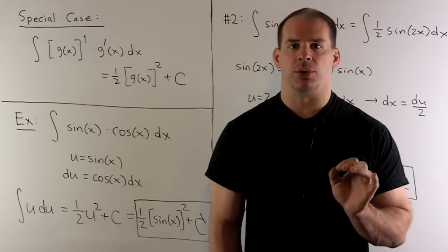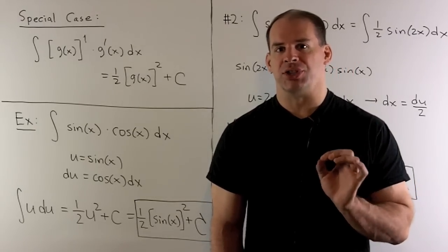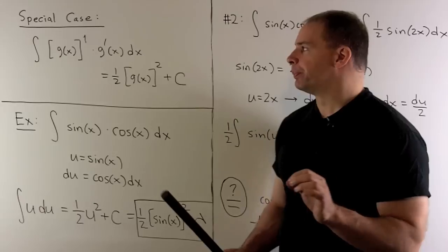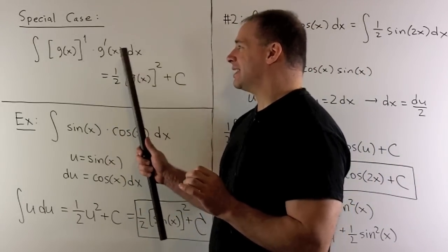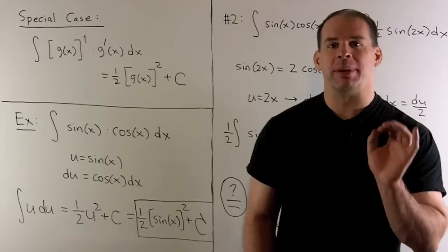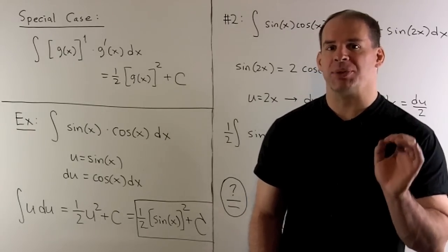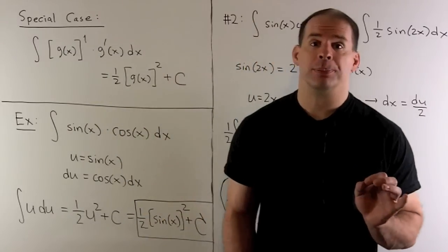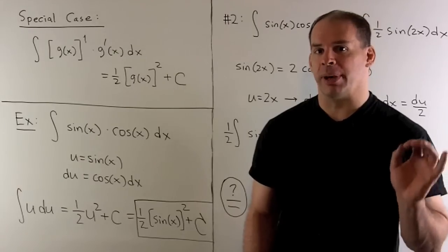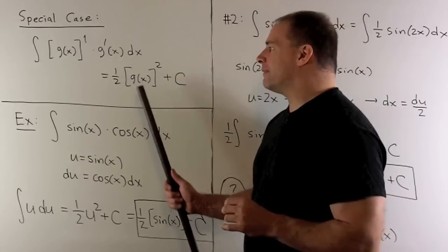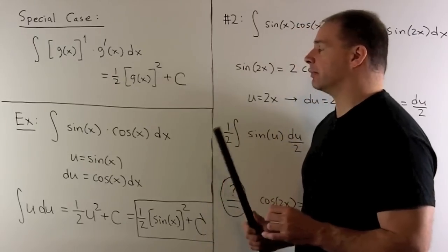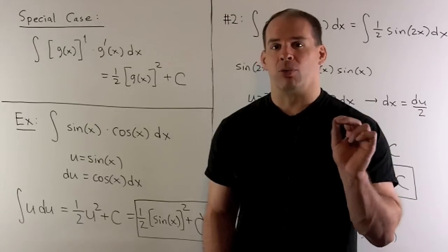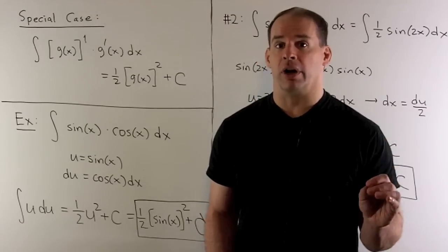One drawback to integration by substitution is that it may not be clear that you have a composition in your integrand. So we set aside a special case where I have a function times its derivative — that's going to be an integration by substitution. The composition is just taking your inside function and raising it to the first power. When you do your integration by substitution, you'll get one-half your inside function squared plus a constant.